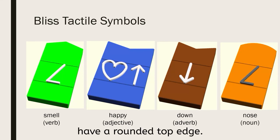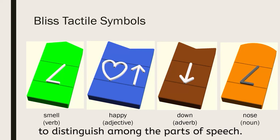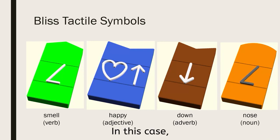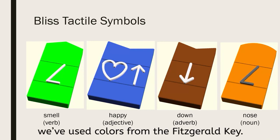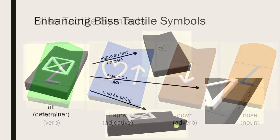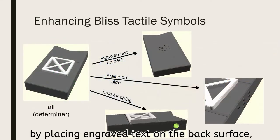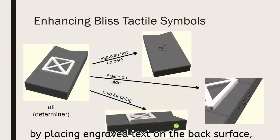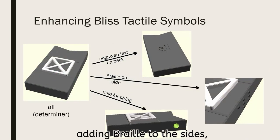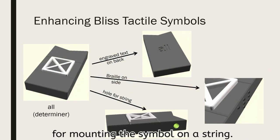Nouns, on the other hand, have a rounded top edge. In addition, you can use filament color to distinguish among the parts of speech. In this case, we've used colors from the Fitzgerald key. The symbols can be enhanced by placing engraved text on the back surface, adding braille to the sides, or including holes at different locations for mounting the symbol on a string.